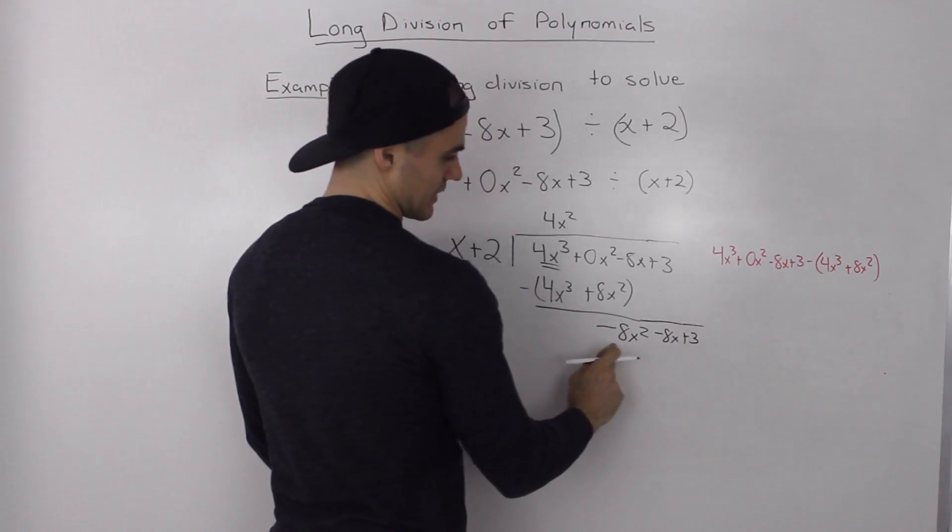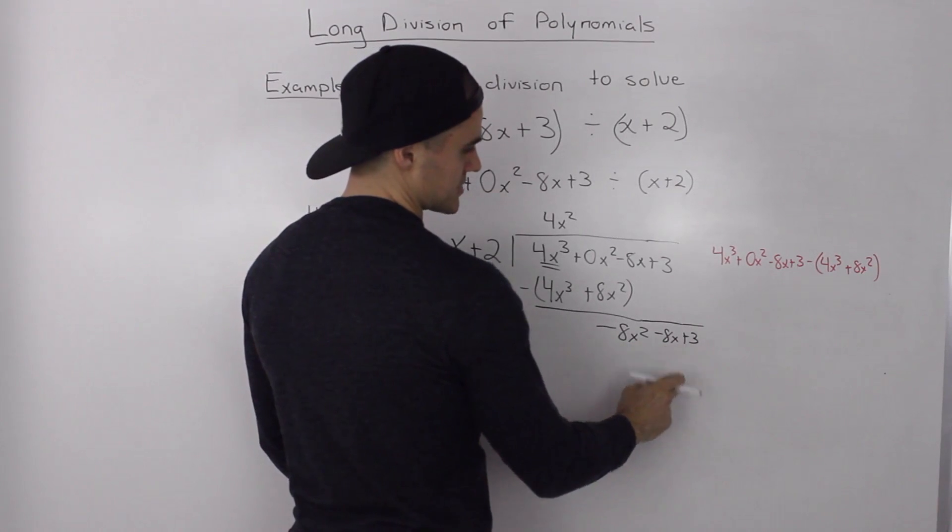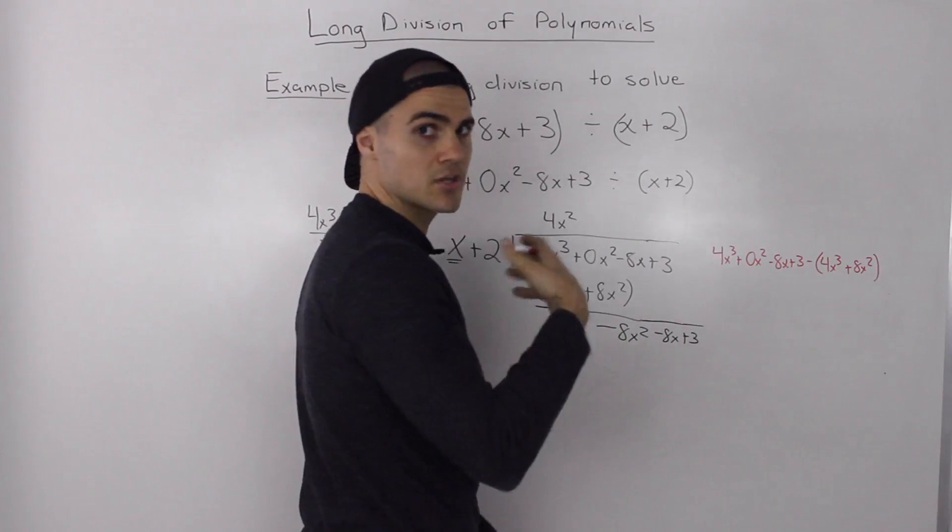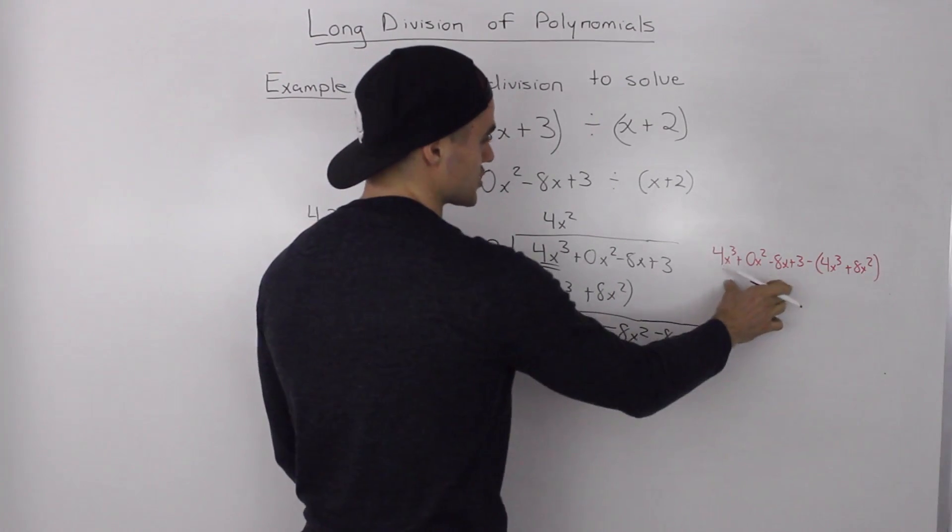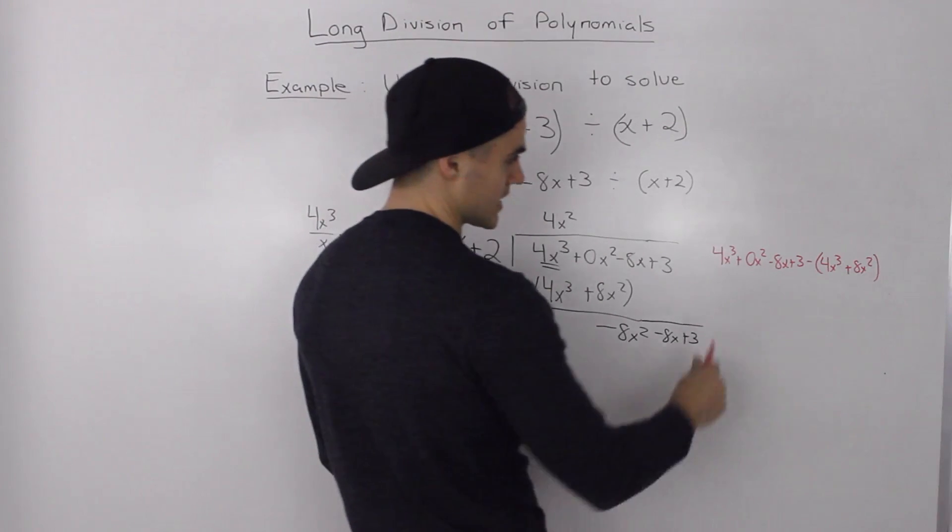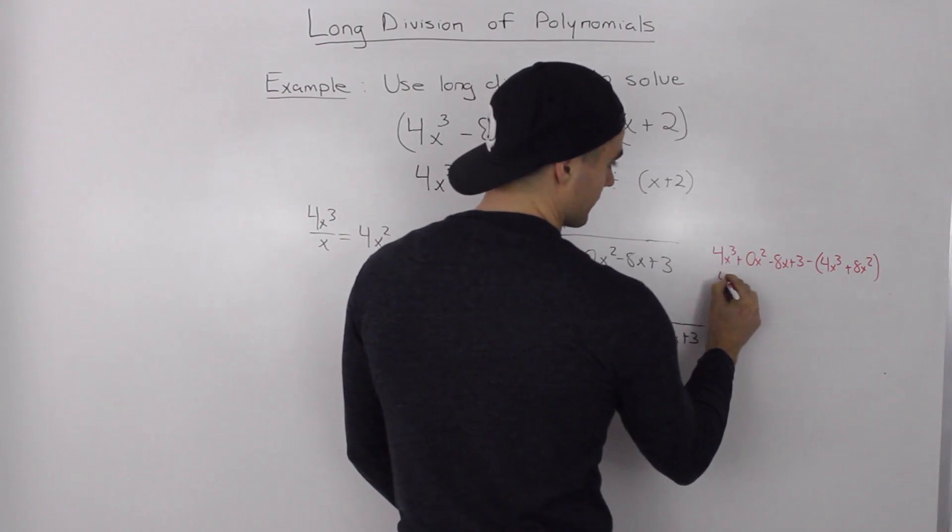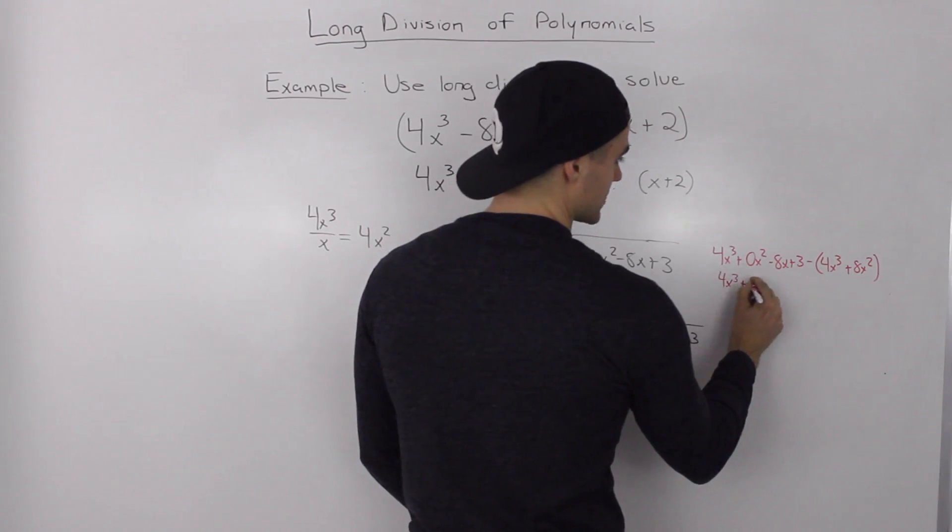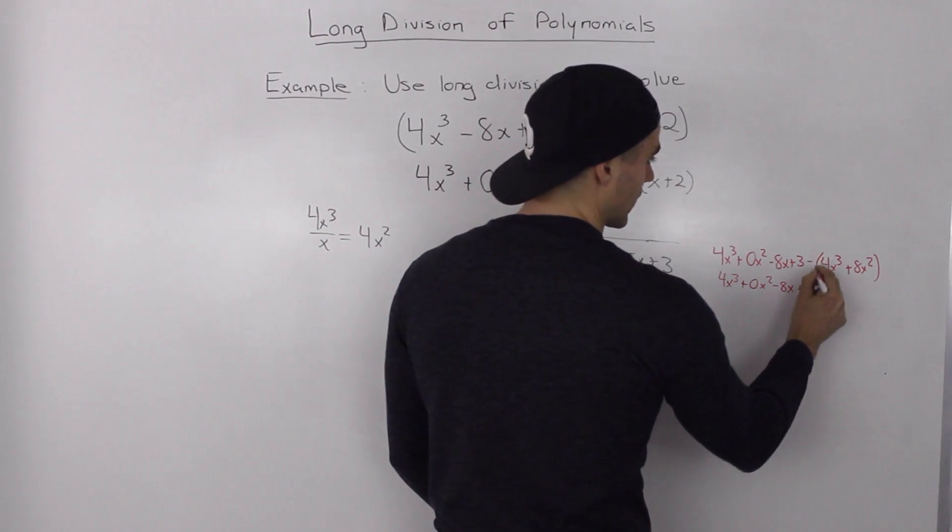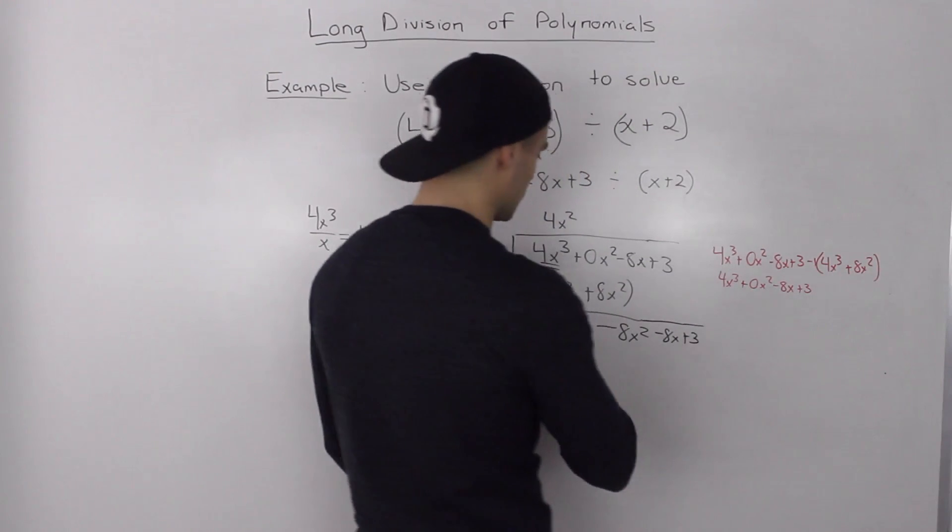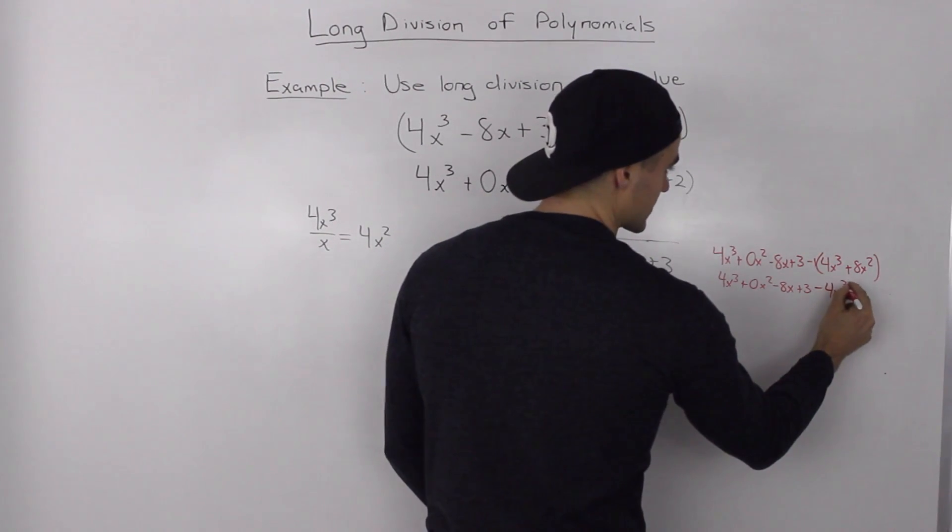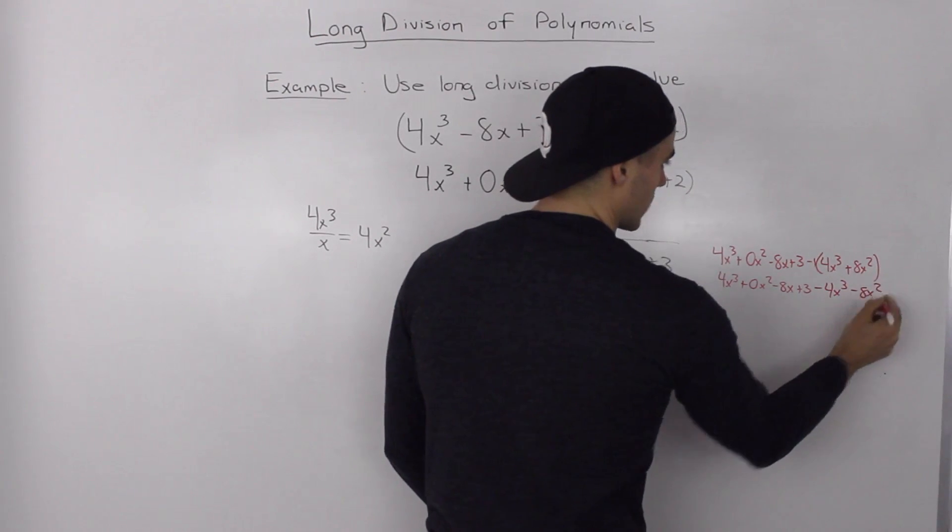Now, we're going to make sure that this negative 8x squared minus 8x plus 3 is correct. So, we're going to do this subtraction on the side. As I mentioned in the previous videos, I highly suggest you start doing this just to make sure that there are no algebraic mistakes. So, 4x cubed plus 0x squared minus 8x plus 3, we rewrite. And then this negative 1, we distribute it inside the bracket. So, we end up having negative 4x cubed minus 8x squared.